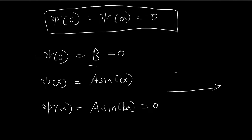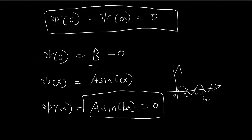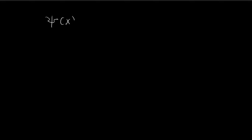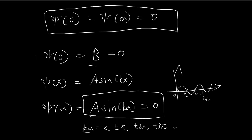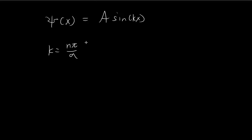Since the sine function equals zero at 0, ±π, ±2π, ±3π, and so on, for A sin(ka) = 0 we need ka = nπ. Dividing both sides by a gives k = nπ/a. We have now found k, so all that remains is to find A.